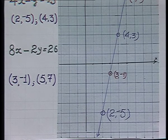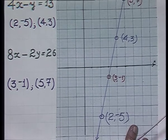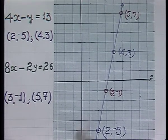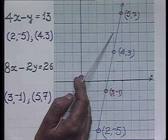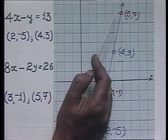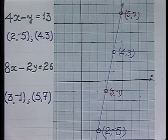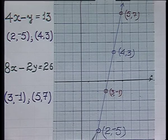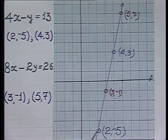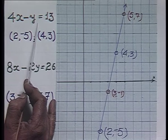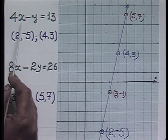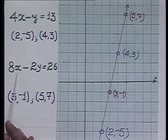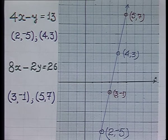The ordered pairs for the first and second lines are lying on the same line — the two lines are completely overlapping each other. Since there are infinitely many ordered pairs on the line, all of them satisfy both equations: 4x minus y equals 13 and 8x minus 2y equals 26. So this system has infinite solutions.